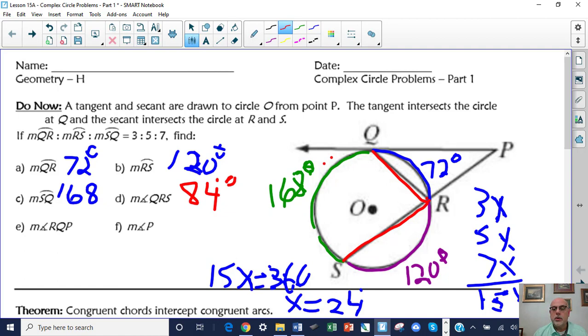Now let's look at angle RQP. That's this one here. How is that angle formed? PQ is a tangent and QR is a chord. So it's an angle formed by a tangent and a chord, and it's half of the arc that it intercepts, so it's half of 72, or 36 degrees.